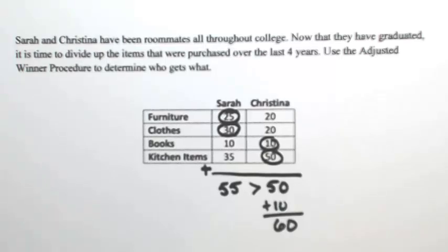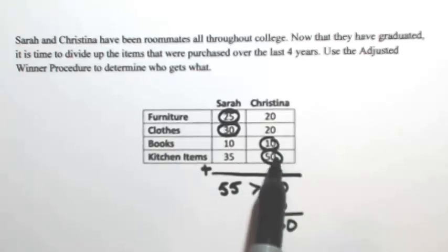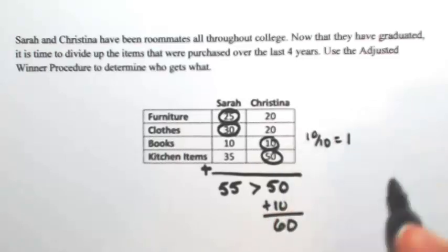So what we need to do is figure out what Christina needs to give up. She needs to give up part of something that she has. So of the two things that have been circled on Christina's side, we're going to divide her points by Sarah's points to figure out the point ratio. So for Christina, she has the books and the kitchen items, so 10 over 10 is 1, which means that they want that item just as much as the other person.